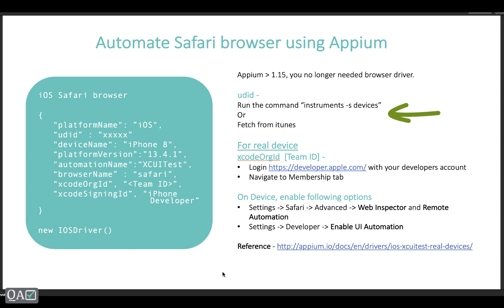Alternatively, if you have iTunes installed, open it and it will show the connected device. Click on the device name and it will give you the UDID. Next is deviceName — for example iPhone 8, iPhone 11, or an iPad name. Then platformVersion, which is the iOS version of your device. automationName, because it is iOS with Appium, is XCUITest. And browserName is Safari.